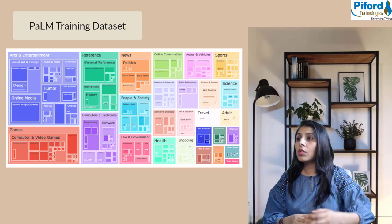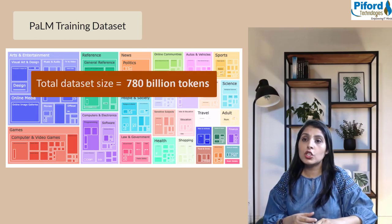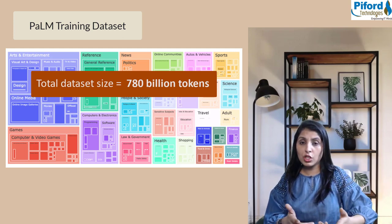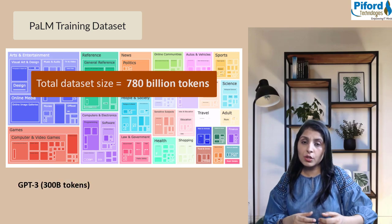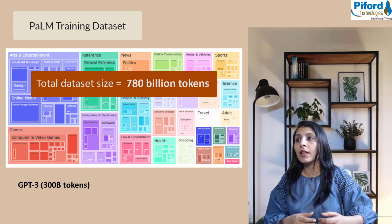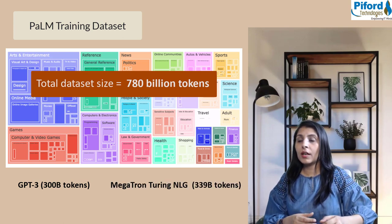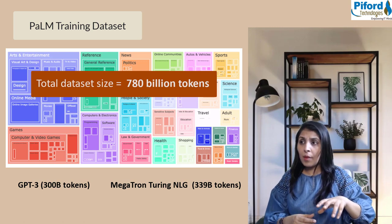Let's talk about the dataset used to train this model. The total dataset size of PaLM is 780 billion tokens, whereas previous language models like GPT-3 have 300 billion tokens and Megatron-Turing NLG has 339 billion tokens.